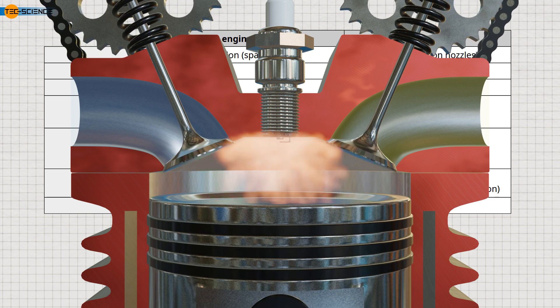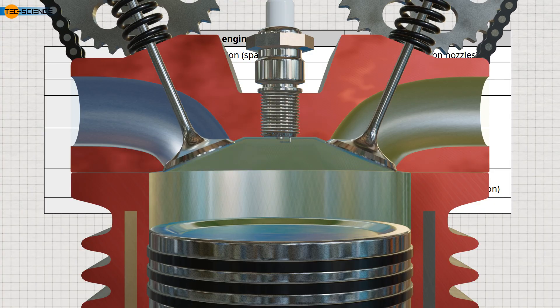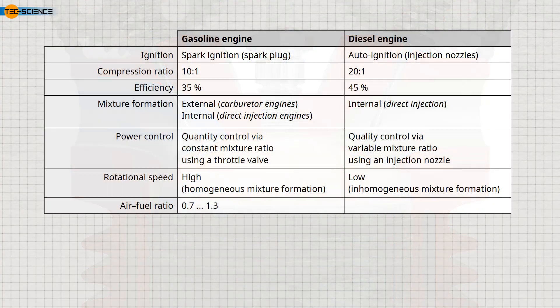Gasoline engines can only operate effectively with air numbers between 0.7 and 1.3. Outside this range, the gasoline-air mixture is no longer ignitable, unlike diesel. Diesel engines generally operate with significantly more excessive air than gasoline engines, and therefore with a higher air-fuel ratio, ranging from 1.3 to as high as 6.